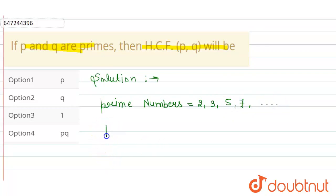So, if I put P to 2 and Q to 3, if I put HCF of 2 and 3, then how much will it come? 1 will come.